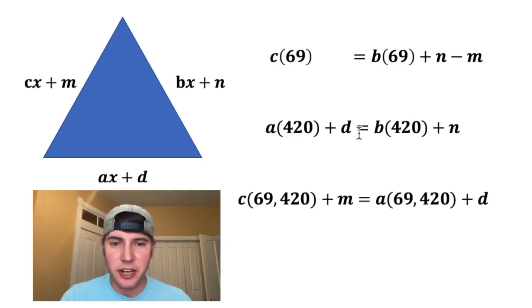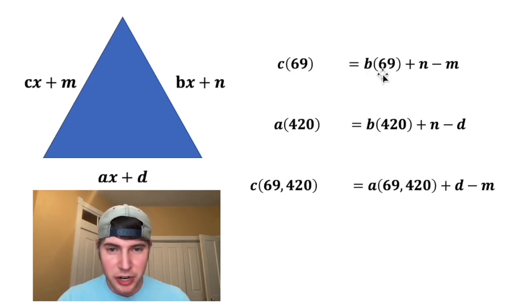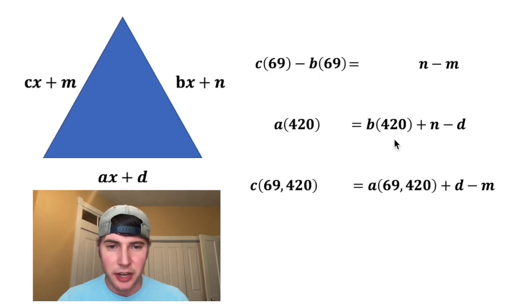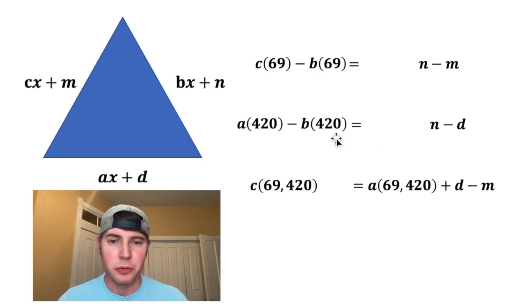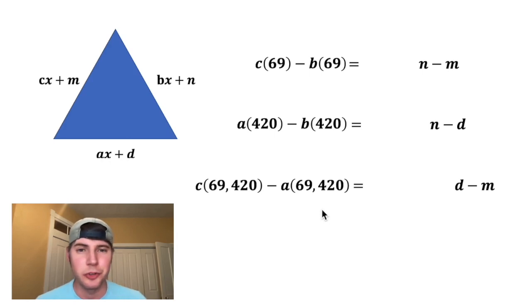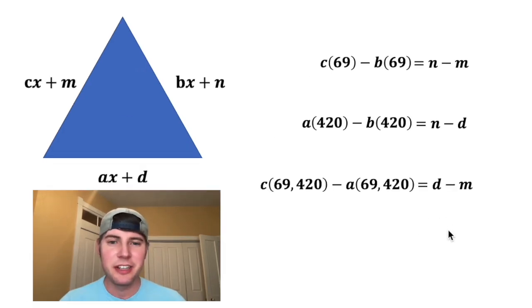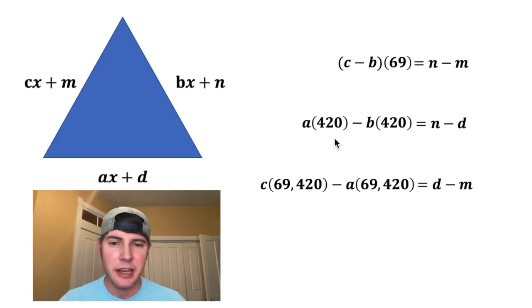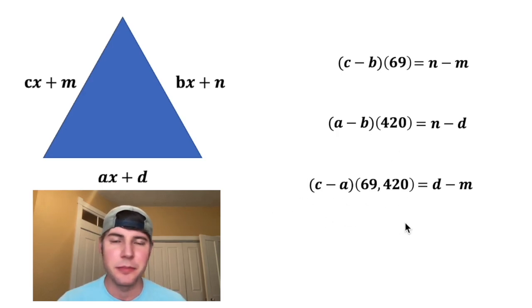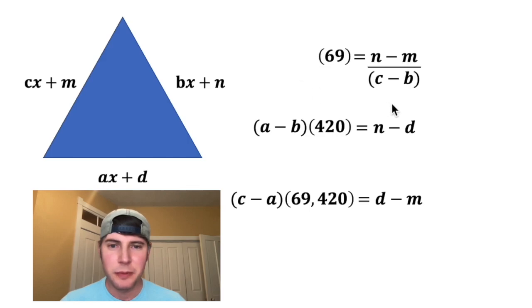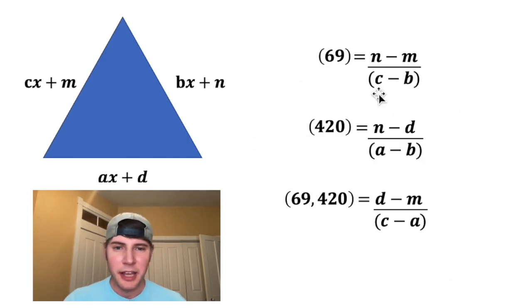And then from here, I subtracted m from both sides, subtracted d from both sides, and subtracted m from both sides. And then I subtracted b·69 from both sides, subtracted b·420 from both sides, and subtracted a·69,420 from both sides. Then I smushed everything together, factored out the 69 to give me (c minus b)·69, factored out the 420 to give me (a minus b)·420, and factored out the 69,420 to give me (c minus a)·69,420. Then I divided both sides by (c minus b), divided both sides by (a minus b), and divided both sides by (c minus a).